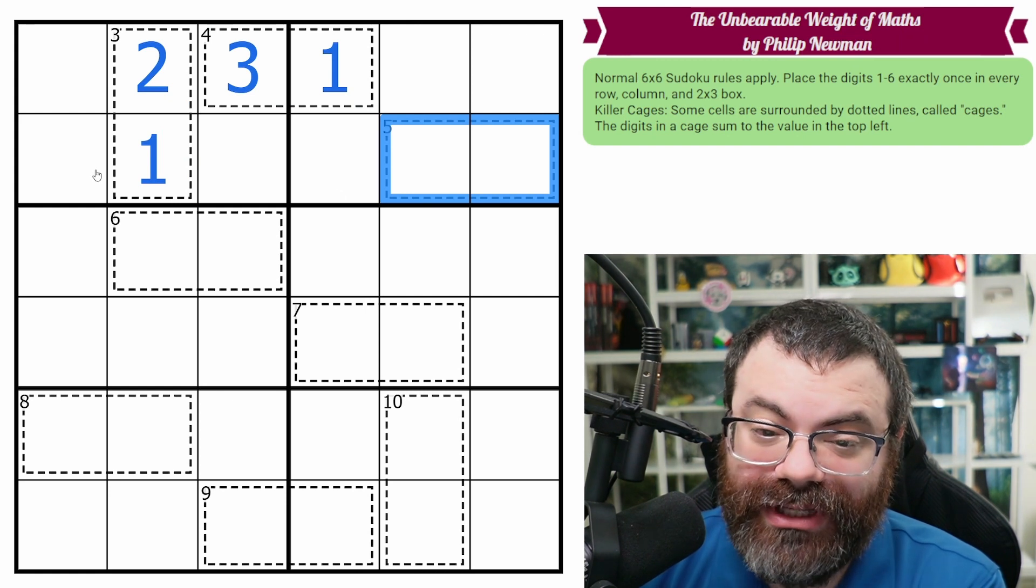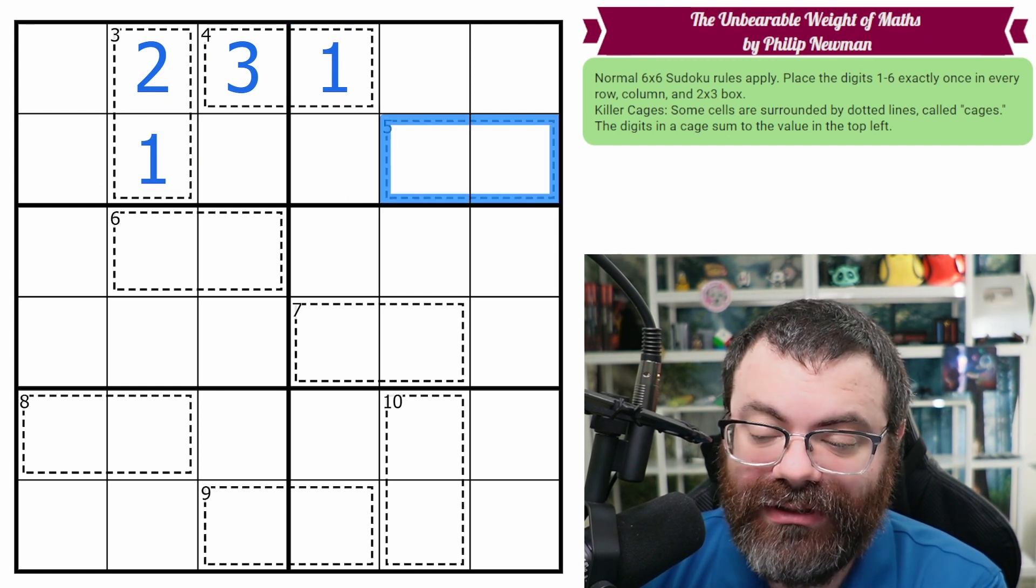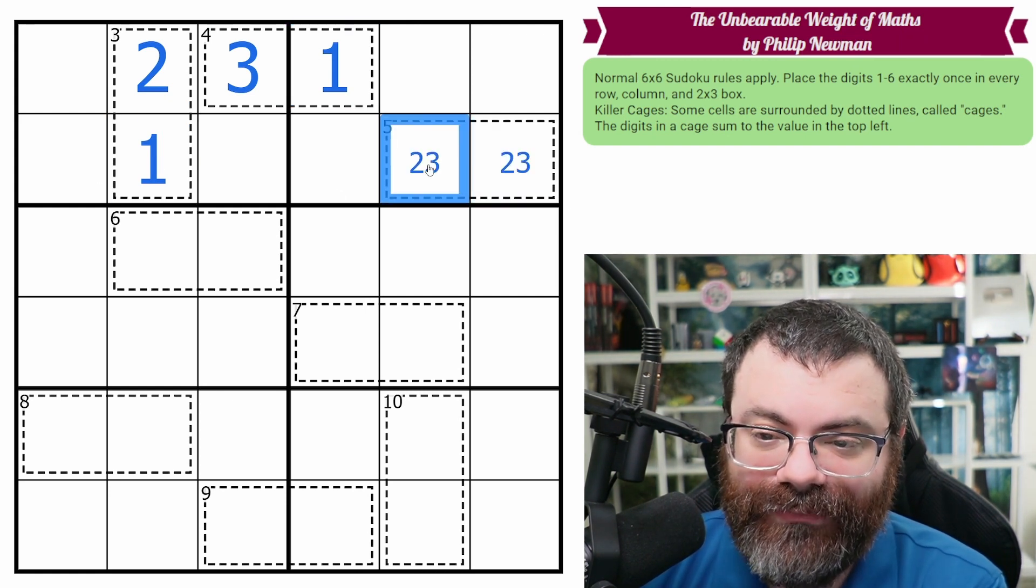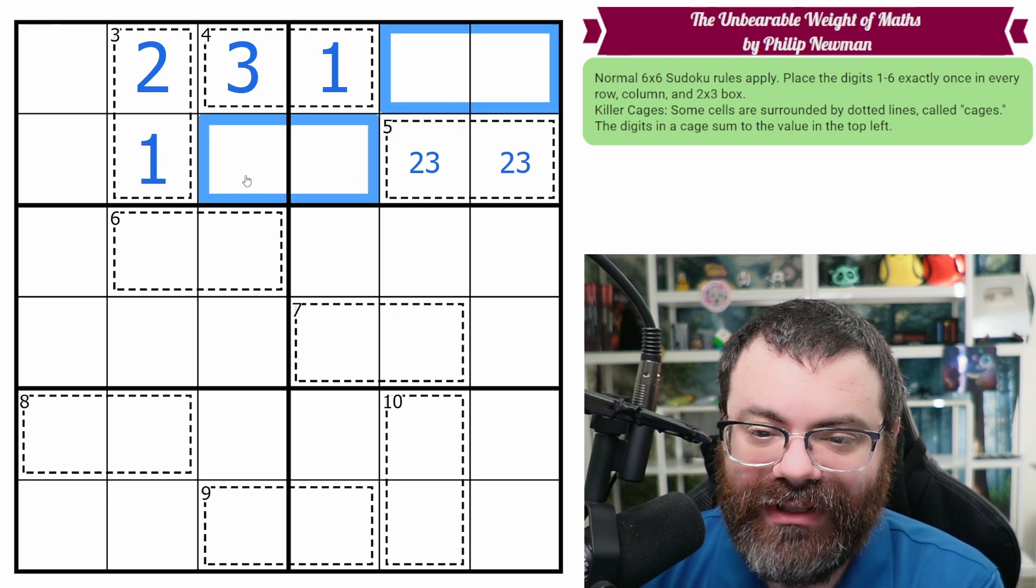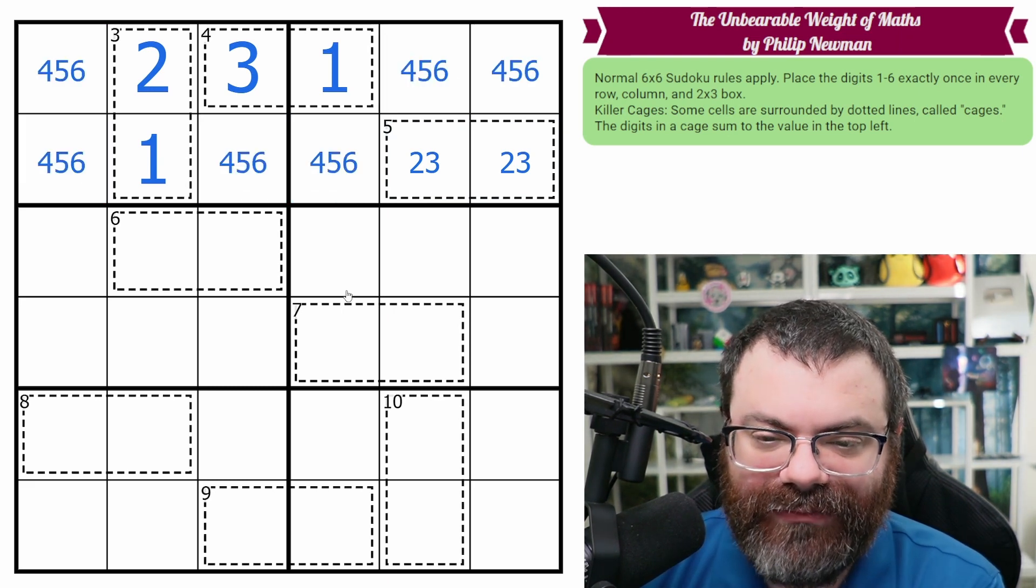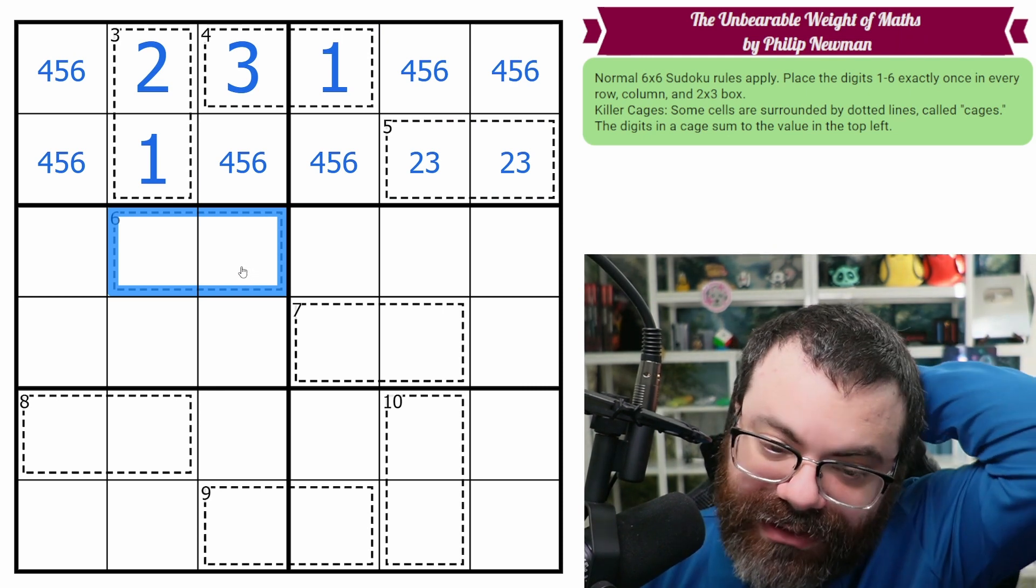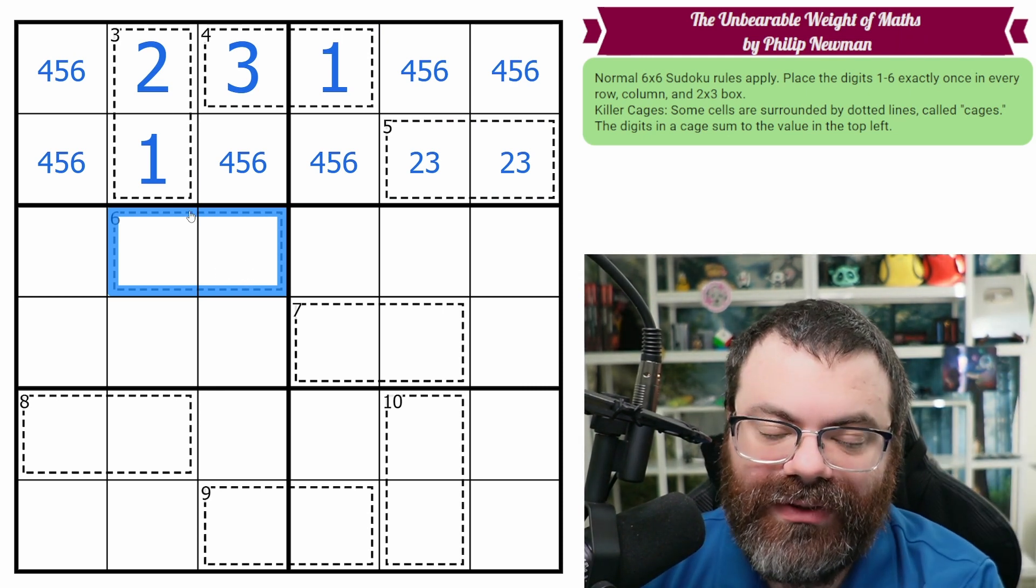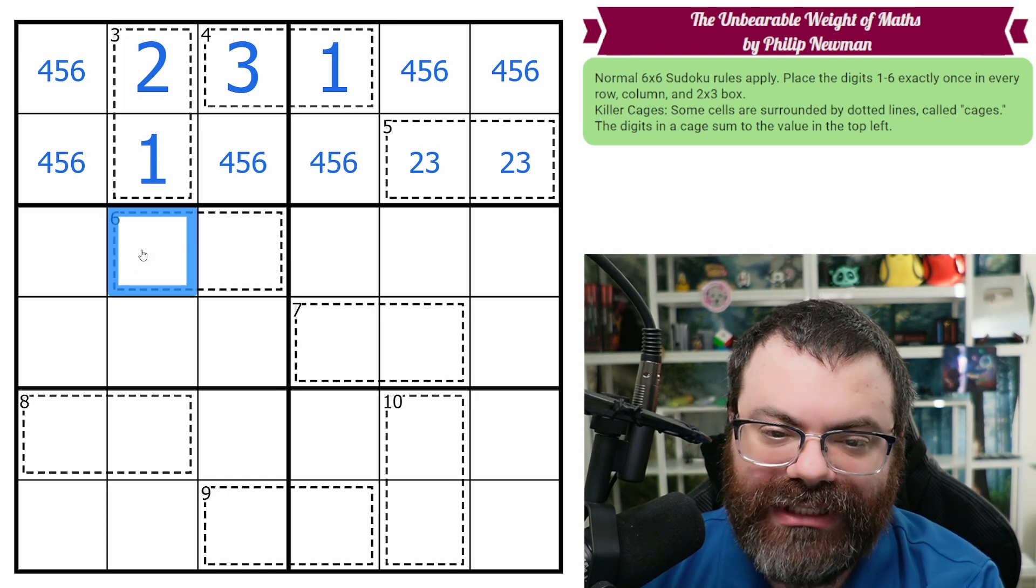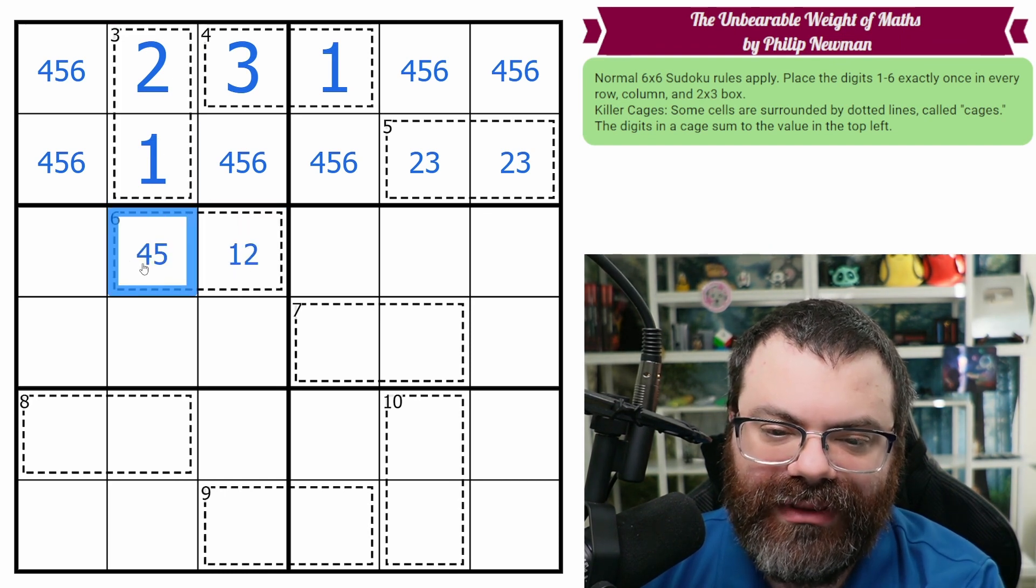All right, this 5 is 1-4 or 2-3, but it can't be 1-4 because of the 1's missing, so it has to be 2-3. Let's just fill that all of these are 4-5-6 now. It might be helpful. The 6 is either going to be 1-5 or 2-4. So it has a 1 or a 2 in it, which can't go here. So that's going to go here along with this 4-5.